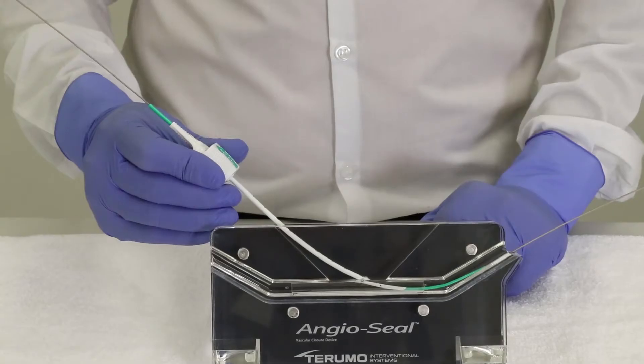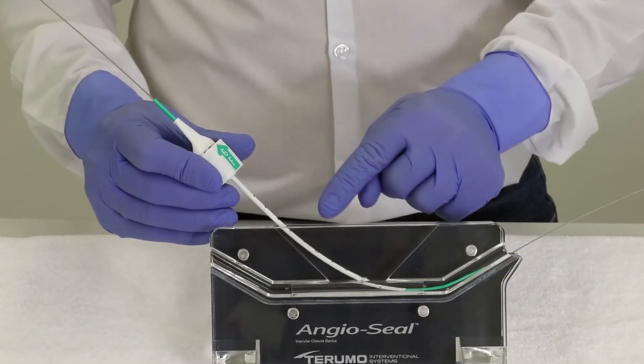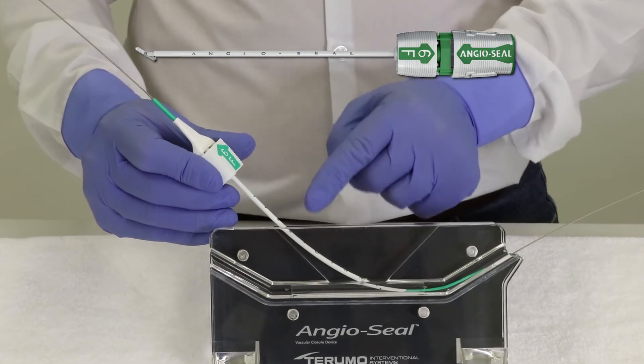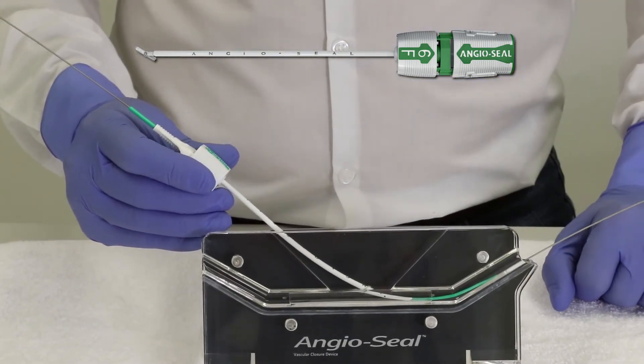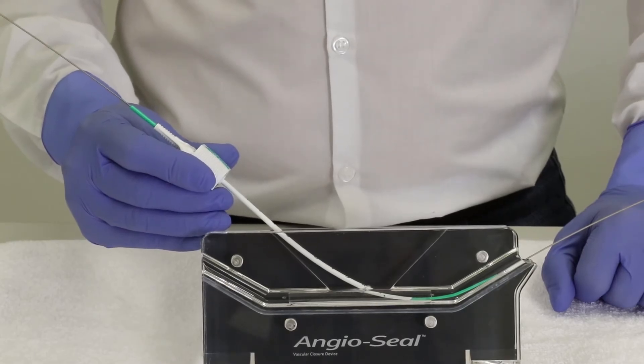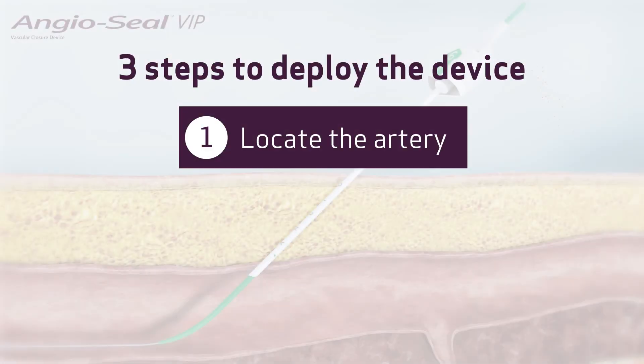Look at the letter on the sheath which indicates your depth. There's one centimeter between each letter. It's a kind of marker to help you assess how deep you are in case it were to come out or move. This step is called locate the artery.